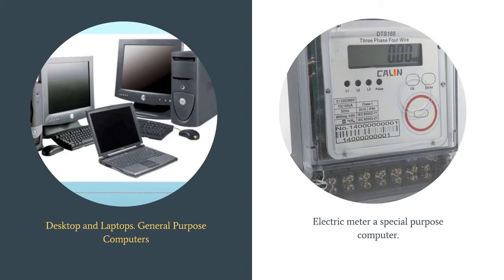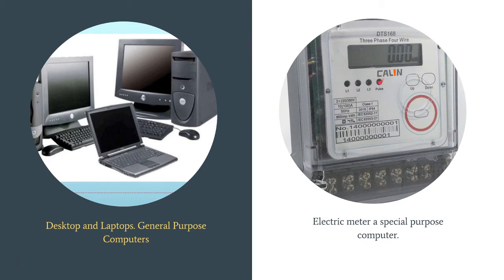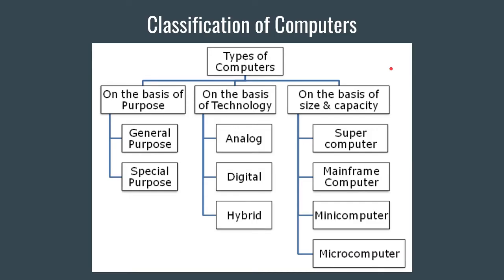Special purpose computers are like calculators, which are meant to perform only basic arithmetic or mathematical calculations — for example, scientific calculators. Another example is the digital electric meter, whose sole purpose is to compute the electricity that has been consumed.